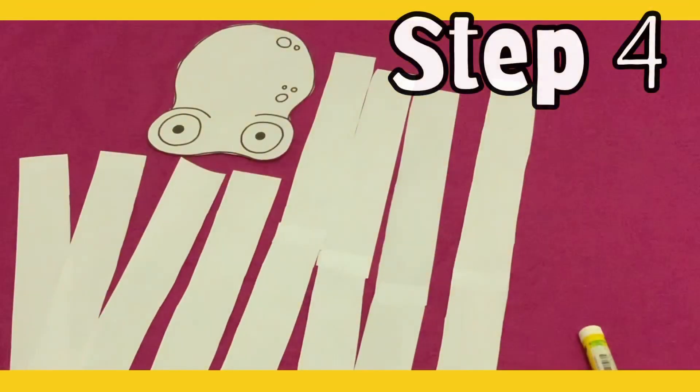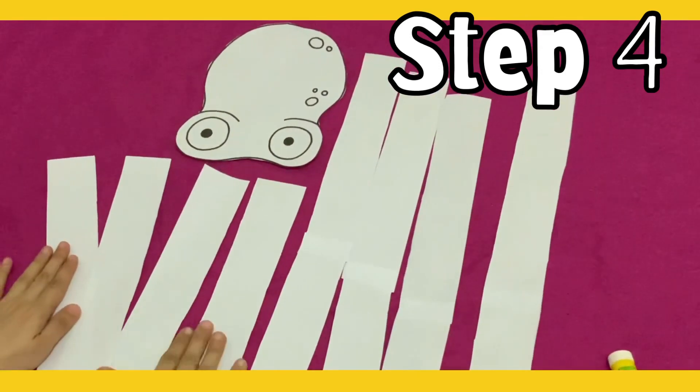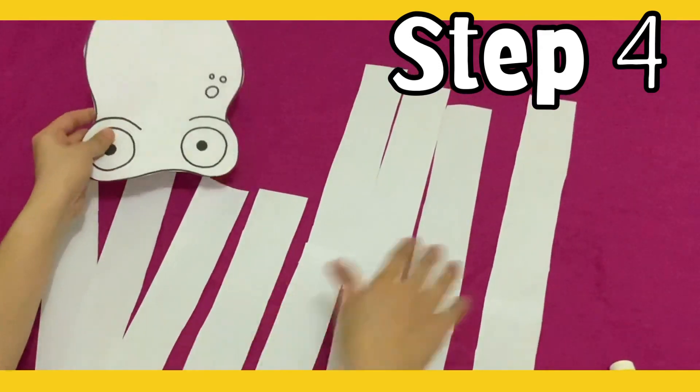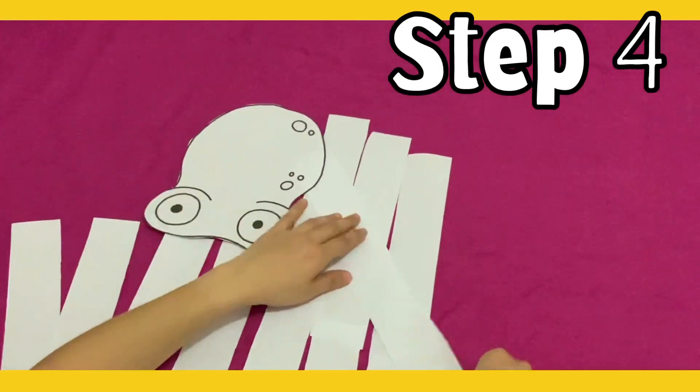For step four, we are going to paste all of the tentacles at the back of the head of the octopus. Everybody look carefully. This is how I'm going to paste the tentacles.